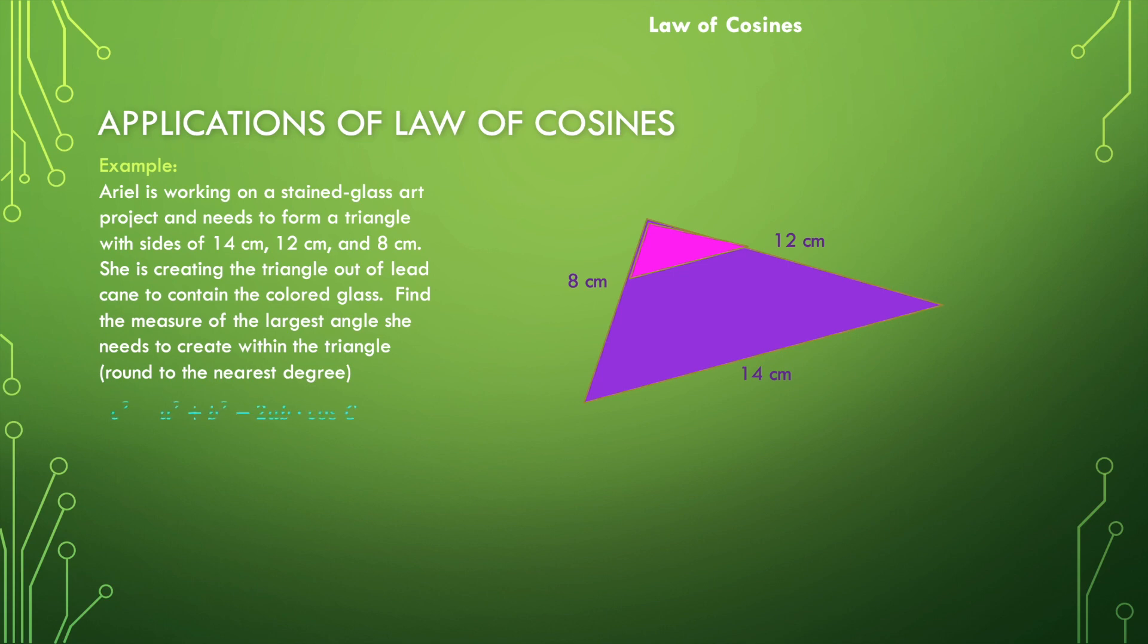Now we just need to apply the law of cosines and solve for that angle measure. Remember that the angle we're solving for is going to be opposite the side length opposite here. So this c value has got to be 14 centimeters, and then a and b can be 8 centimeters and 12 centimeters. So 14 squared is equal to 8 squared plus 12 squared minus 2 times 8 times 12 times the cosine of c. We're trying to isolate c.